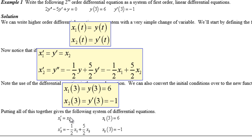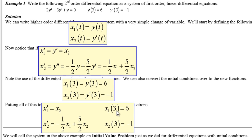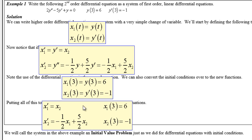Putting it all together, the system is: x1' = x2 with initial condition x1(3) = 6, and x2' = -½·x1 + 5/2·x2 with initial condition x2(3) = -1. That is how you convert a second order differential equation into a system of first order linear differential equations.